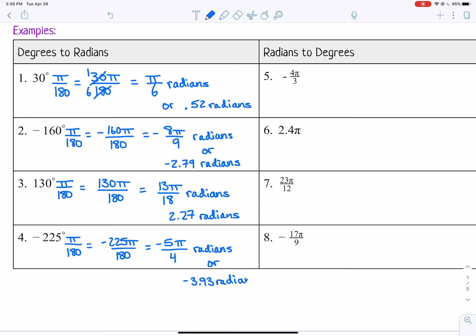If you are converting from degrees to radians, the main idea is you just have to multiply by pi over 180. And then you either leave it in terms of pi or get a decimal.